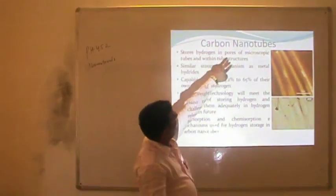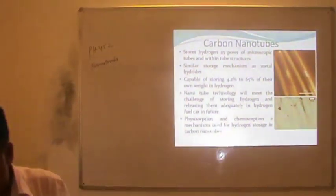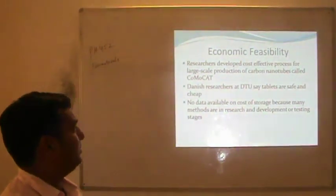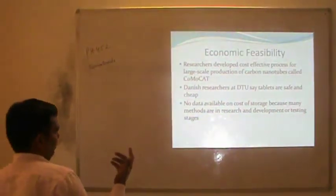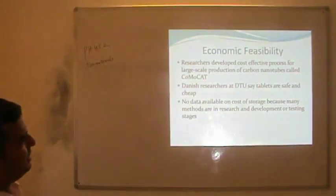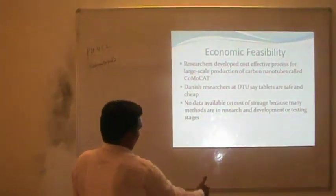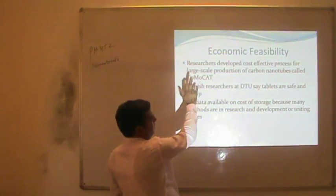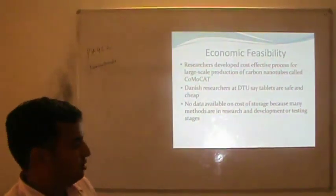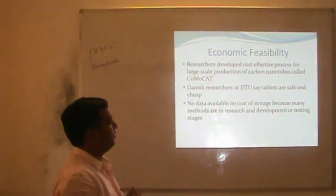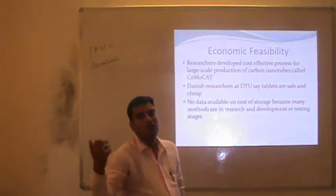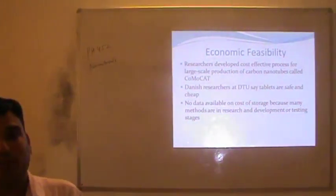Researchers have developed a cost-effective process for large-scale production of carbon nanotubes called CCVD (CoMoCat). It is still under development. Danish researchers have found that tablets are safe and cheap as hydrogen storage devices. No data is yet available on the cost of storage because many methods are in research and development or testing stages. These are the things which may affect the use of hydrogen fuel even in the future, by the next 5 to 10 years.